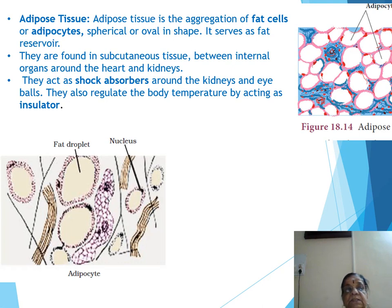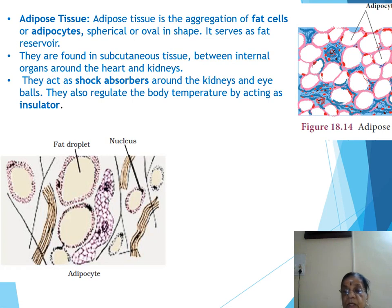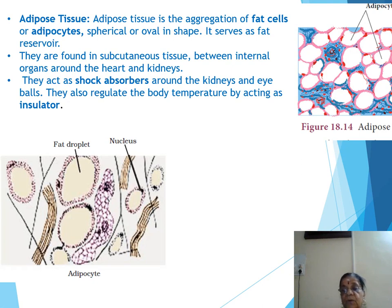Adipose tissue serves as a fat reservoir. We eat regular food, which gets digested. During digestion, carbohydrates and starch are converted into glycogen in the liver, then through further reactions into fats and fatty acids such as cholesterol and triglycerides. These fatty substances are stored in adipose tissue.